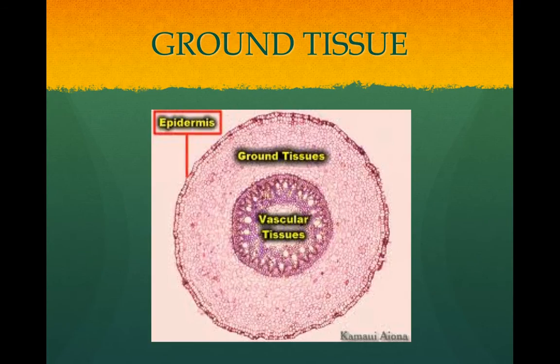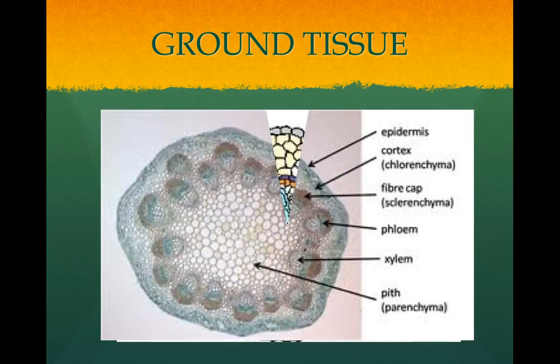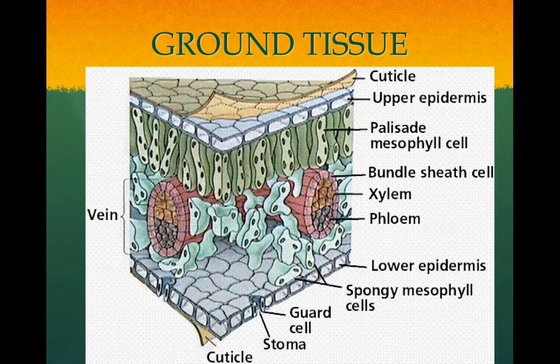Ground tissue fills the space between the vascular and epidermal tissues. In roots, the ground tissue forms the cortex, which is parenchyma cells that store food and take up minerals. The endodermis in the root is the innermost layer of the cortex, and it determines what passes into the vascular tissue. In stems, the ground tissue forms the pith, which fills the center of the stem. In leaves, the ground tissue is the mesophyll, which contains parenchyma cells for photosynthesis.